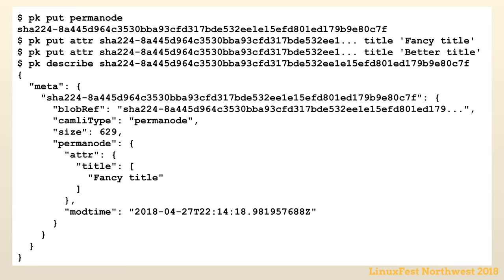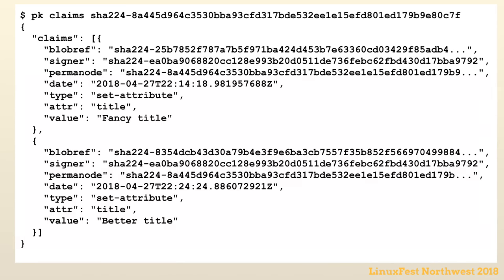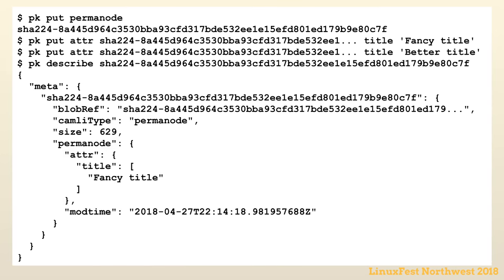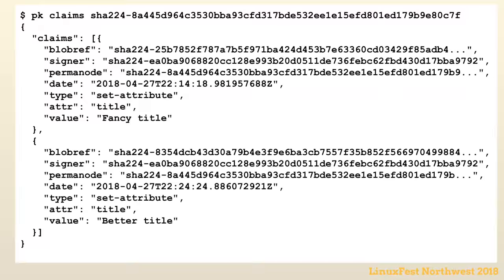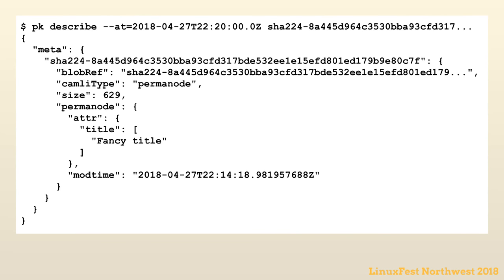You can create an object with pkput permanode, then put attributes on it like 'title: fancy title', then replace the title with 'better title'. Describing the object queries the search and indexing layers for what they think of it all — it returns the permanode and its current attributes. You can also look at the history: listing all claims (signed mutations) shows first it had 'fancy title', then 'better title'. You can also describe the object as it was at a specific point in time by ignoring all mutations that happened after that time.